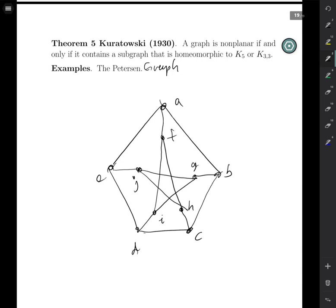A graph is non-planar if and only if it contains a subgraph that is homeomorphic to K5 or K33. So again, complete characterization. What it says is that if a graph is non-planar, then it must contain a subgraph that is homeomorphic to one of K5 or K33. You could have both, but at least one of those.